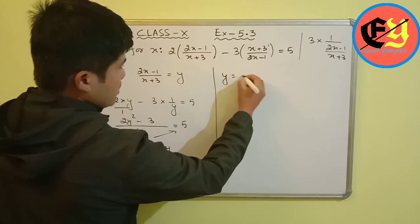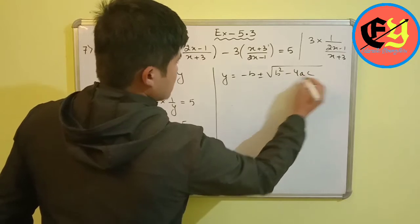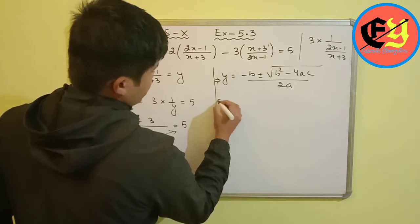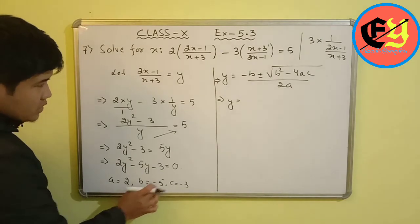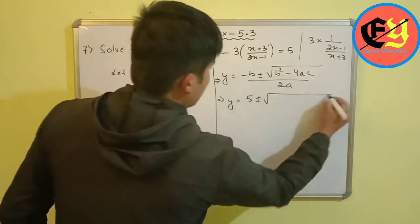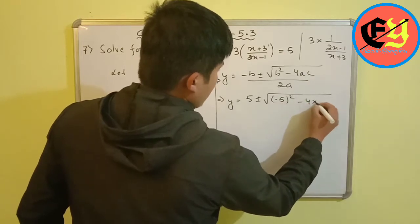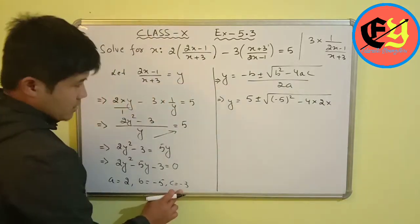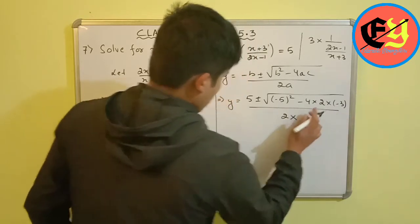Using the quadratic formula: y equals minus b plus or minus root over (b squared minus 4ac), whole divided by 2a. Substituting: b equals minus 5, so minus b is plus 5; b squared is 25; minus 4 times a (2) times c (minus 3) gives plus 24; denominator is 2 times 2 equals 4.